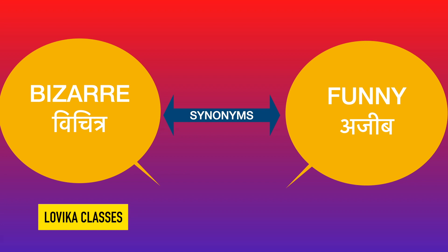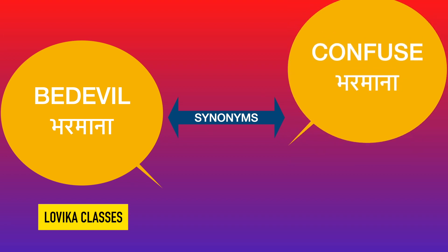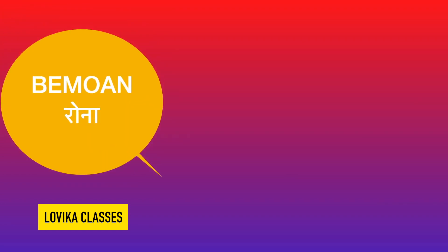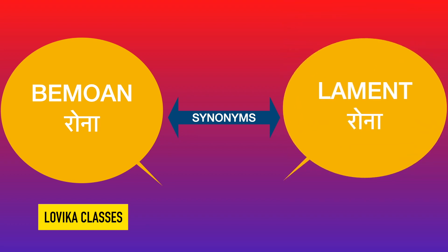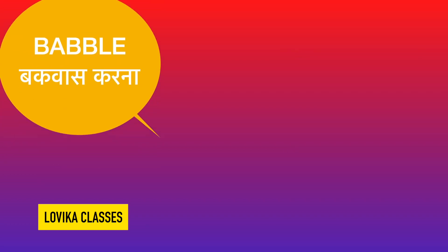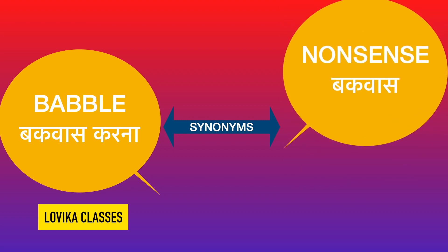Bewilder means barmana — its synonym is confuse, means confuse ho jaana. Bemoan means rona — its synonym is lament. Babble means bakwaas karna — its synonym is nonsense.